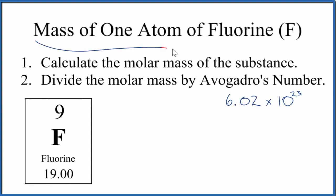To find the mass of one atom of fluorine, F, on the periodic table, all we really need to do is calculate the molar mass, or in this case, it's the atomic mass, the average atomic mass for fluorine.